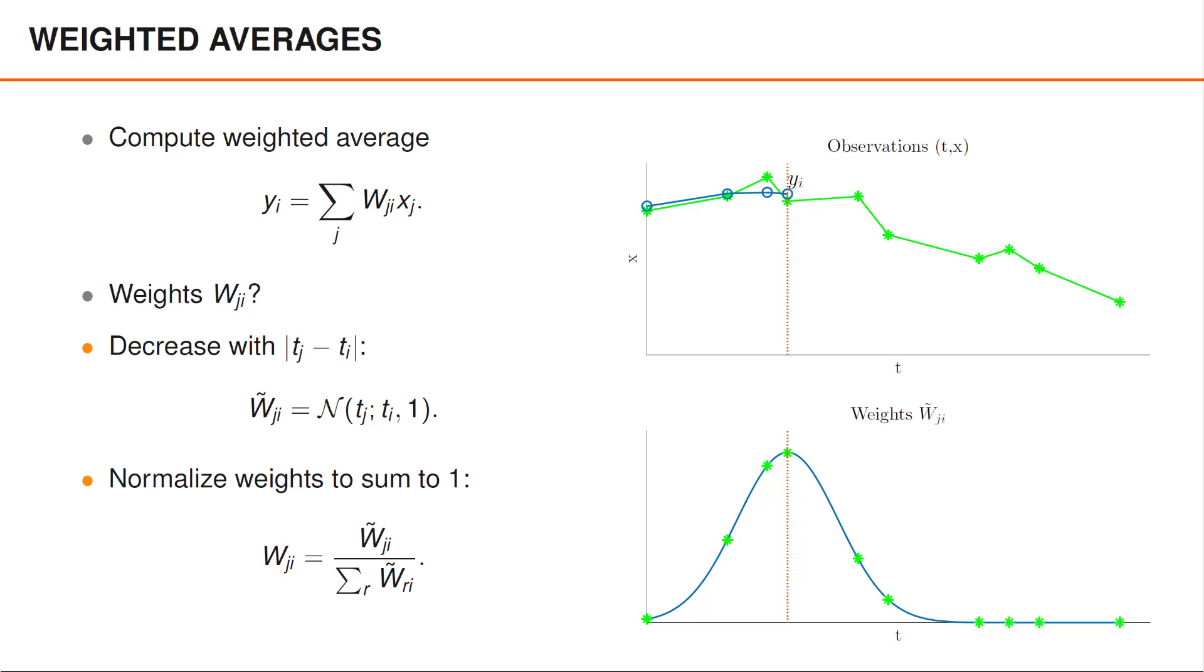we now obtain different weights and thereby different values for y. The resulting estimates are definitely smoother and they probably don't look entirely unreasonable.